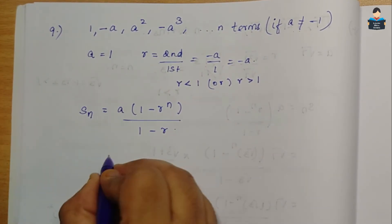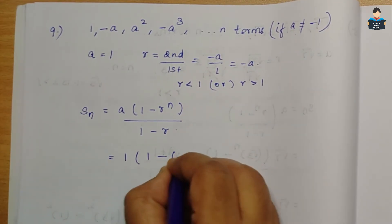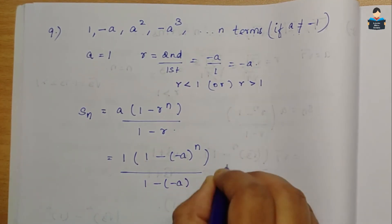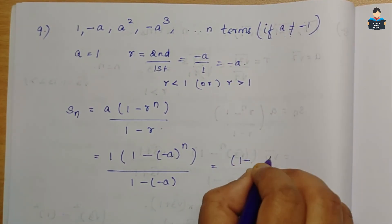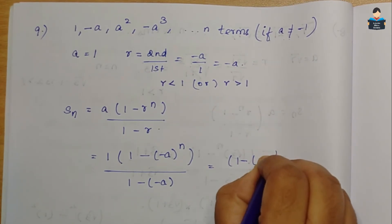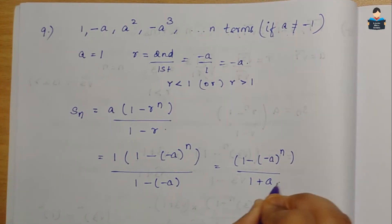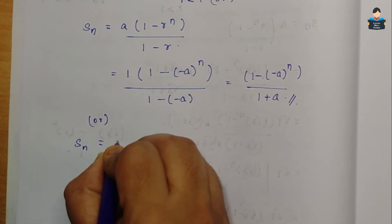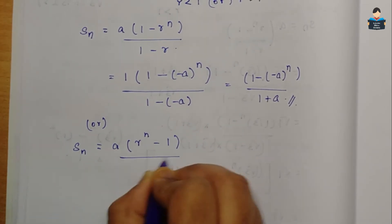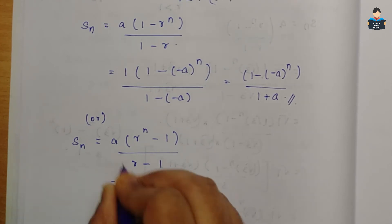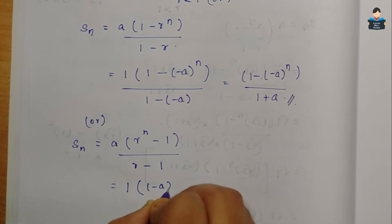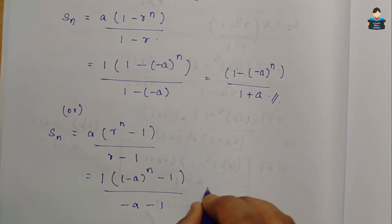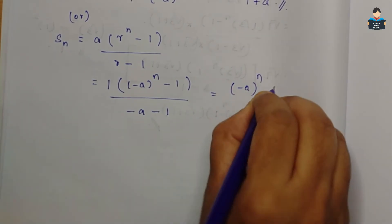Since r is a variable, we can use either formula. Using Sn = a × (1 − r^n)/(1 − r): Sn = 1 × (1 − (−a)^n) / (1 − (−a)) = (1 − (−a)^n) / (1 + a). This is the final answer for the 9th question.